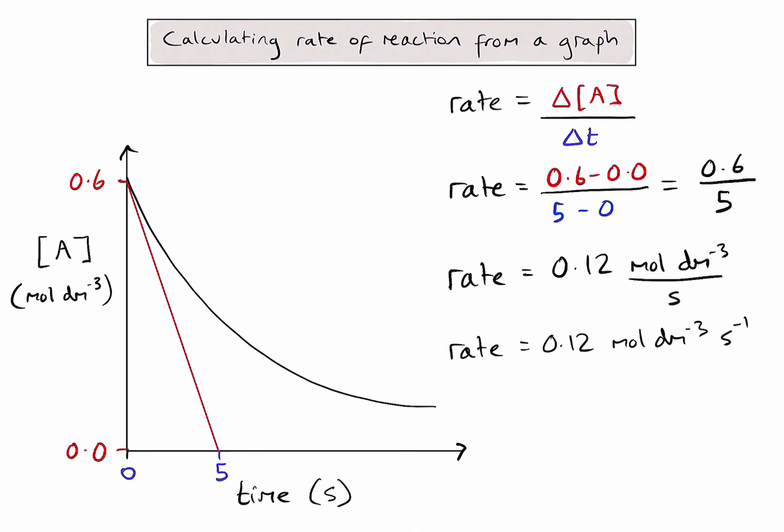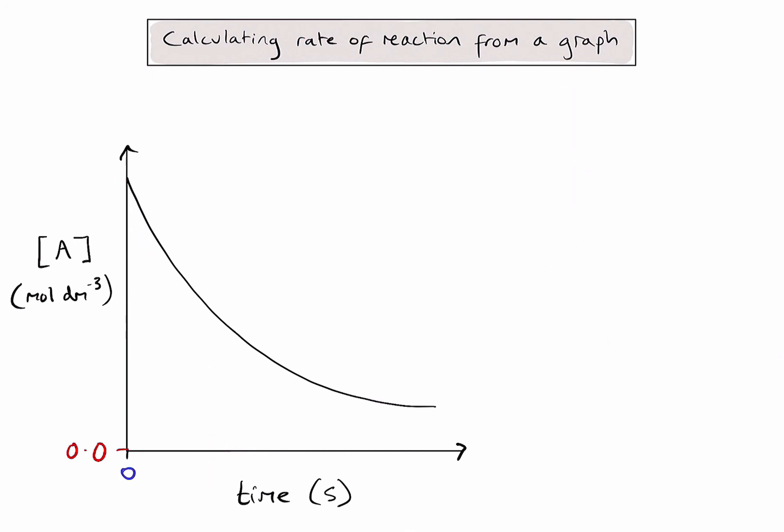And I can repeat this process at as many different time values in my reaction by doing the same thing, drawing a tangent at the curve, and then calculating the rate. If I was asked to calculate the rate at 10 seconds, for example, my tangent might look something like this.